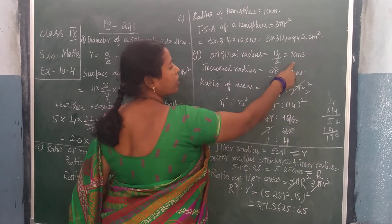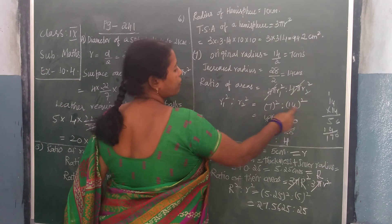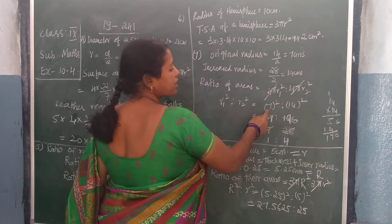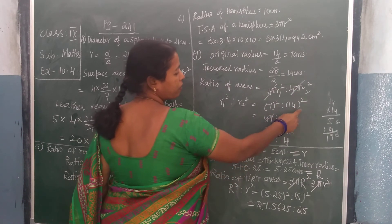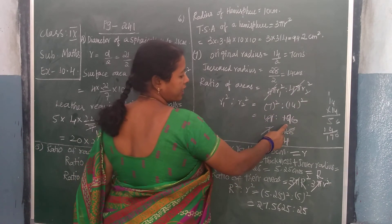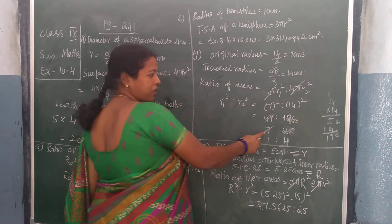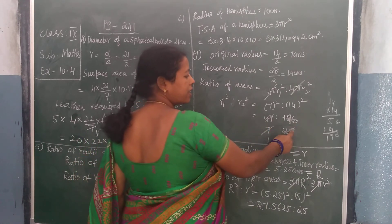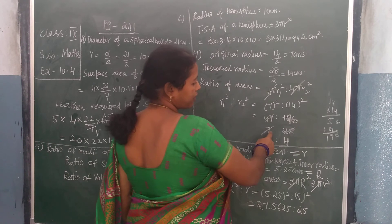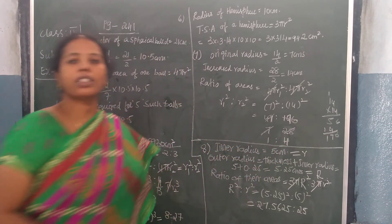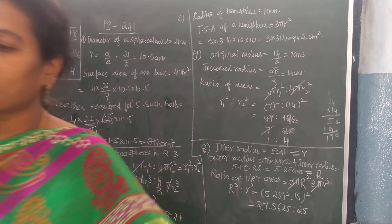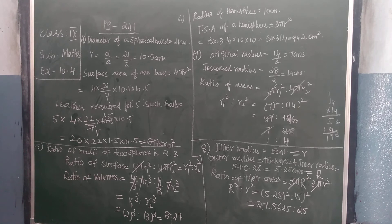What is r1? I have got 7 square. What is r2? I have got 14 square. So 7 squared to 14 squared: cancel 7 from both. The ratio is 1 is to 4.